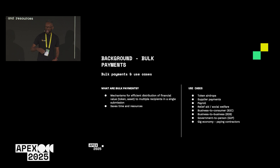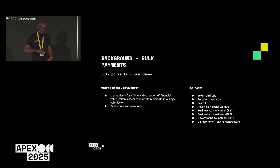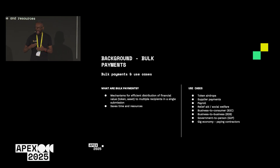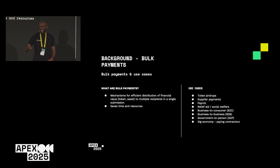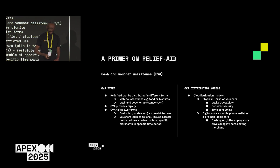What about bulk payments — this idea of paying multiple recipients in one go, saving time and cost? Typical examples include airdrops, where if you launch a new token you pay many people at once. There's payroll, where transactions are submitted and people are paid as soon as payday arrives. You could do B2B payments, B2C payments, or if you're a government distributing grants to citizens, how can you do this as effectively, quickly, and cheaply as possible?